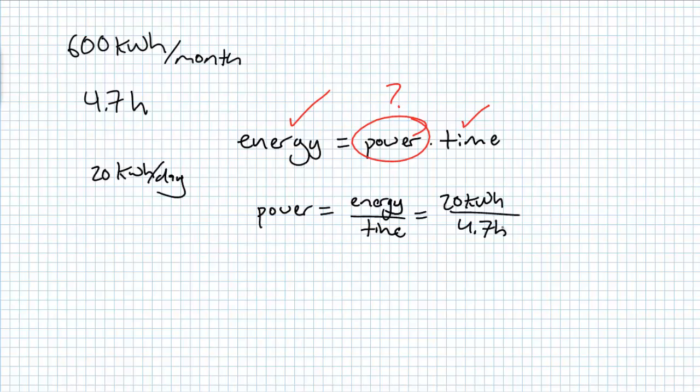Assuming our 600 kilowatt hours per month is for a 30 day month, we're using 20 kilowatt hours per day. Rearranging our energy and power relationship, we find that 20 kilowatt hours divided by 4.7 hours, we realize we need a 4.255 kilowatt array.